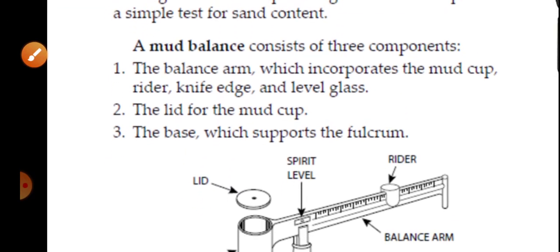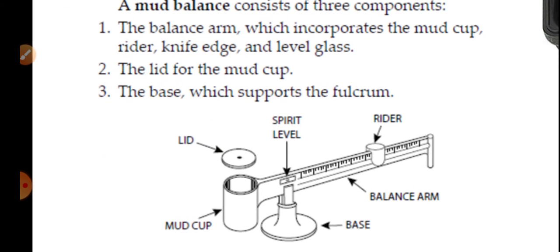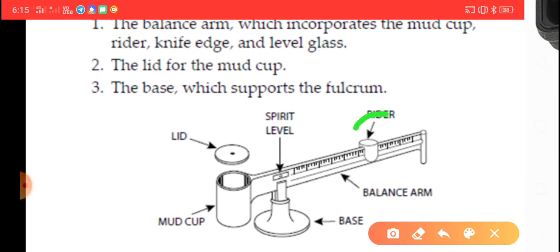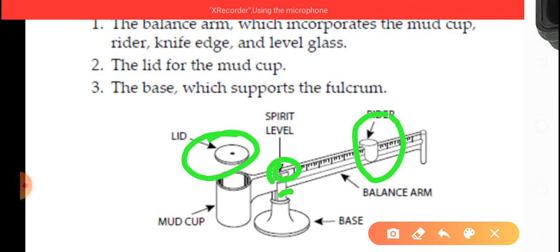The second one is the rider. You see, this is the rider. The next one is knife edge. See, this is the knife edge. Here at the top is the level glass and the lid for the mud cup. This is the lid base, which supports the fulcrum.